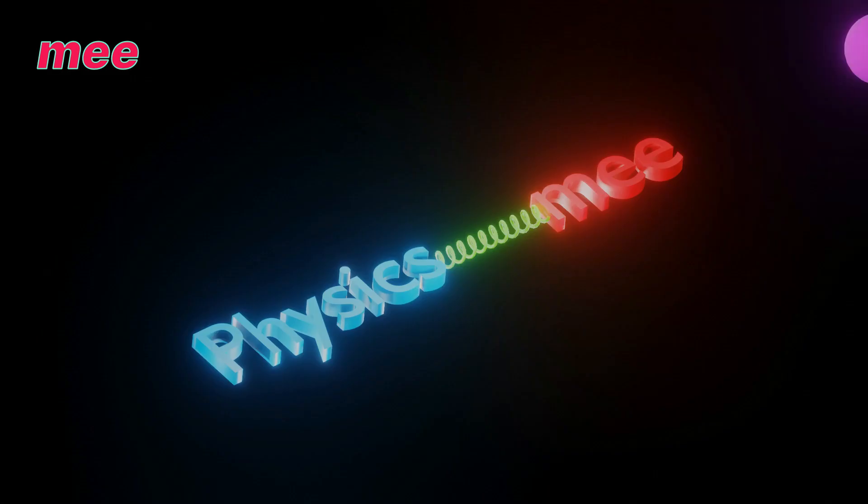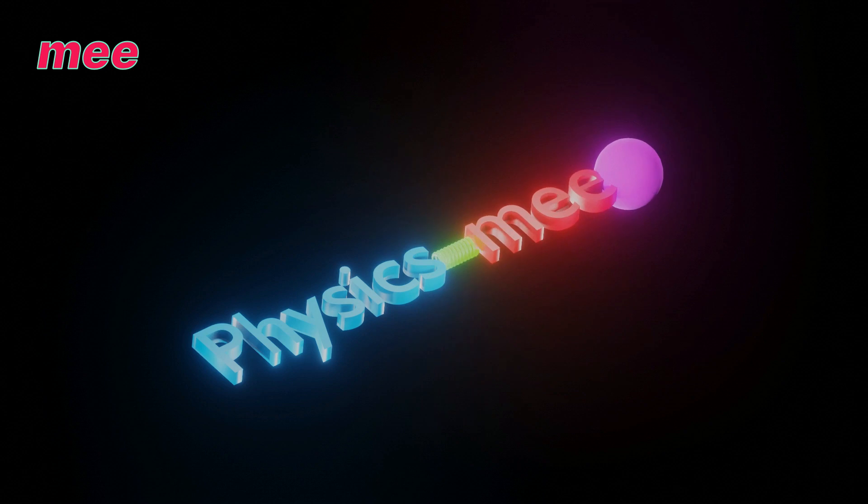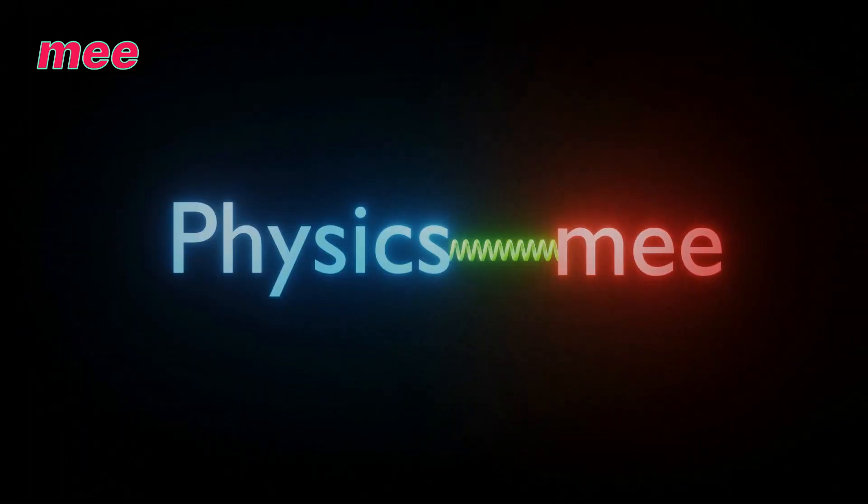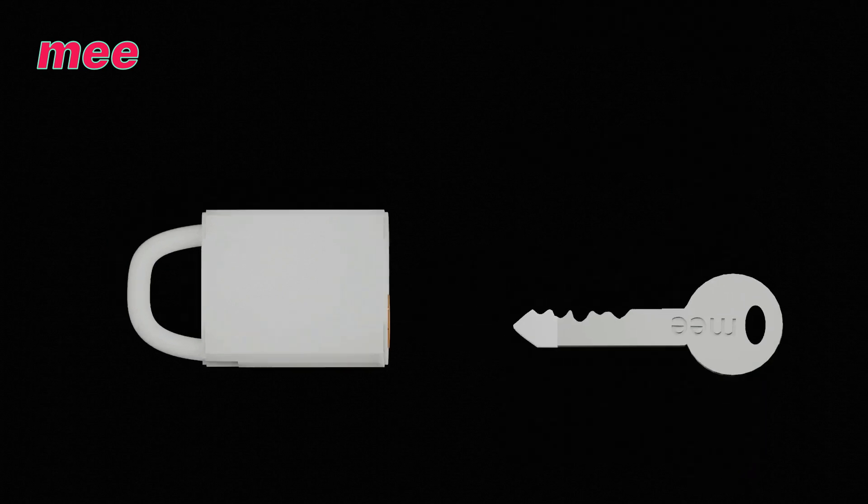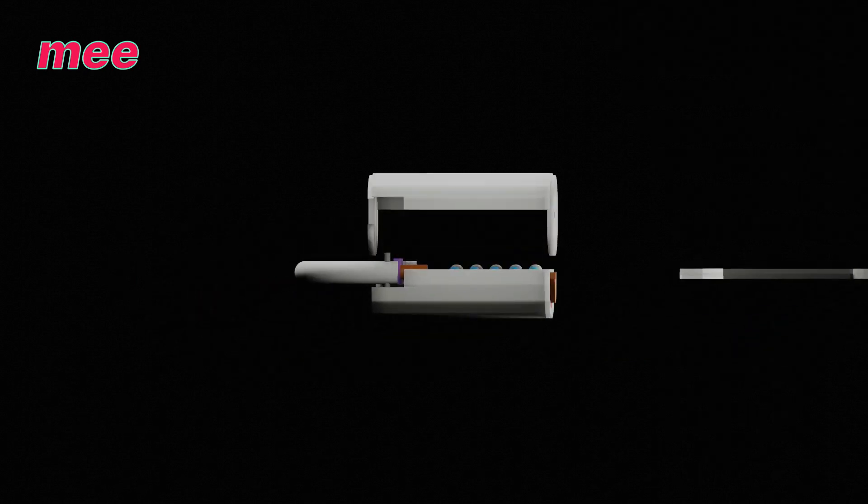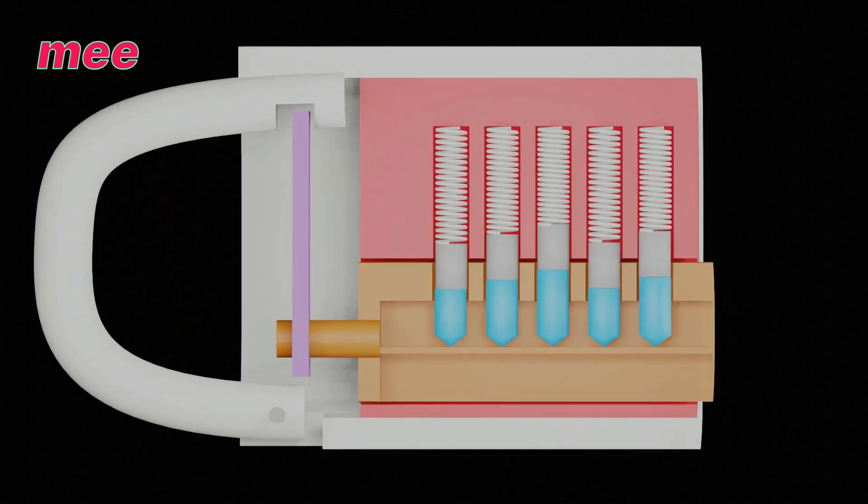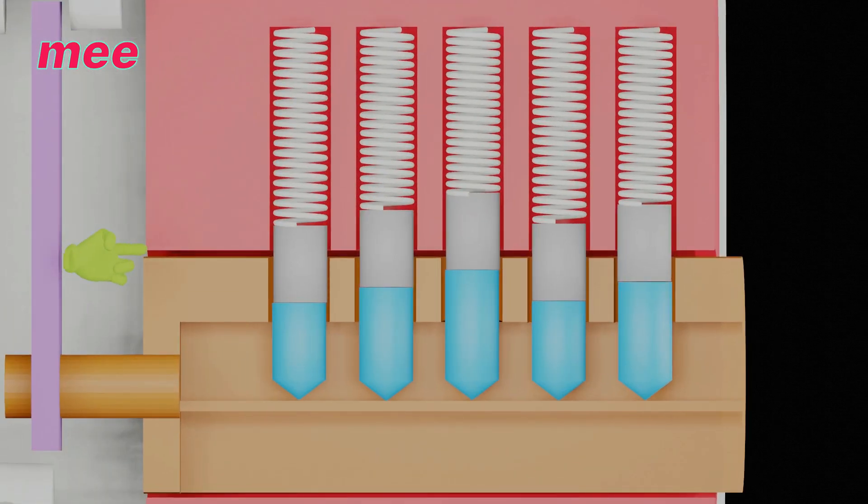This is very simple, but do you know how it works? If not, then come with me. This lock can be opened only by a particular key. If you try a different key, you will not be able to open it. So let's see what is inside this lock and how it works. Here you can...